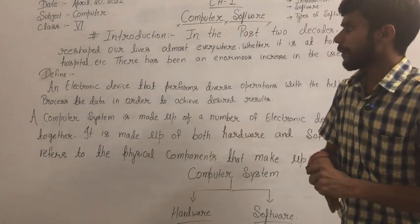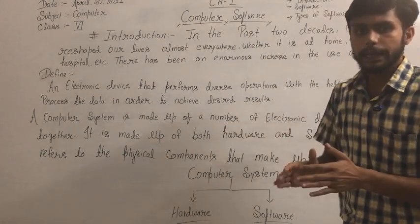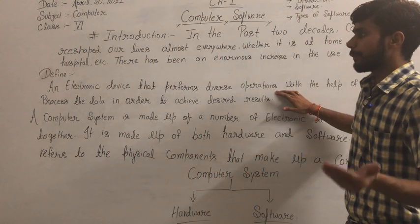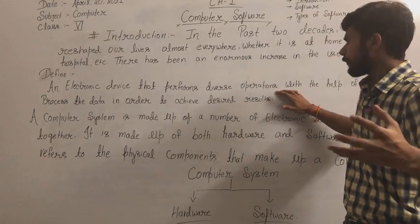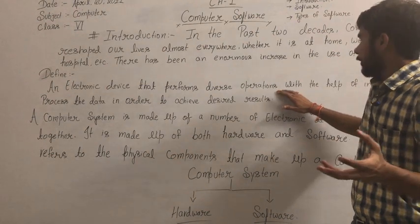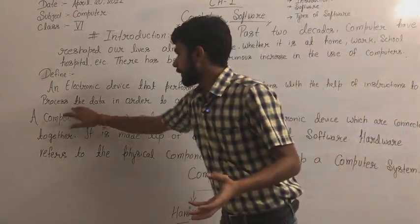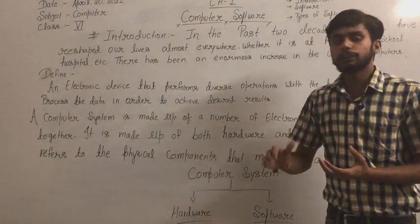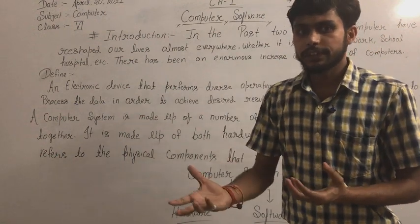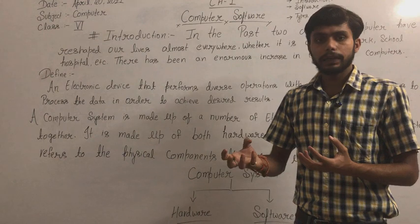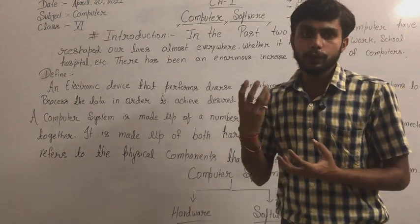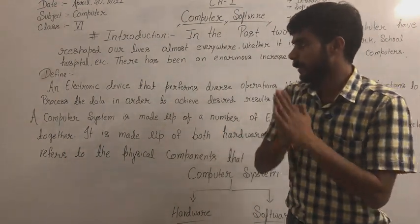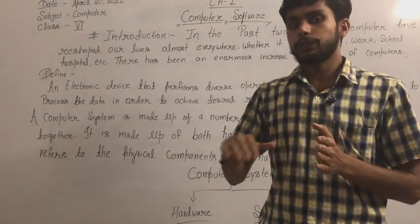In this way, we will discuss the definition of the computer. A computer is an electronic device that performs diverse operations — many different operations — with the help of instructions to process data in order to achieve desired results. Whatever desired results you want, you feed the data and instructions to the computer, and it processes and gives you the result as per your desired requirement.